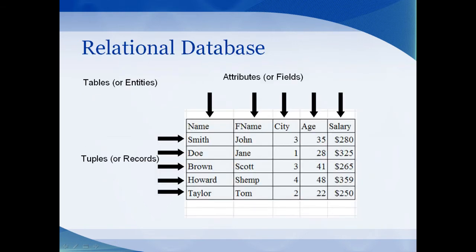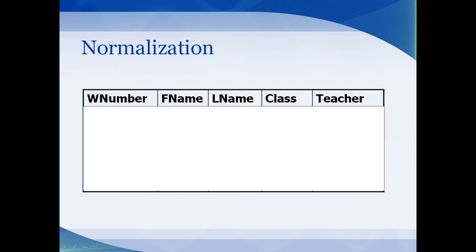A relational database consists of tables, sometimes called entities. These tables consist of rows and columns, just like in Excel. The columns are called fields, and the rows are called records or tuples. Each row is a collection of columns. The problem with a table storing your data is it doesn't really hold the data as nicely as you'd think it would.